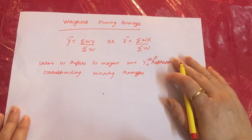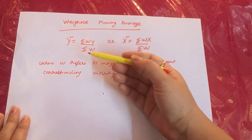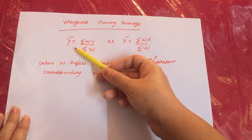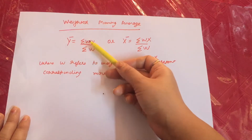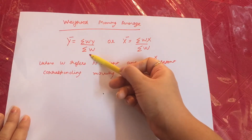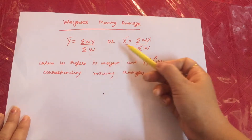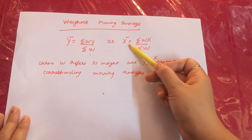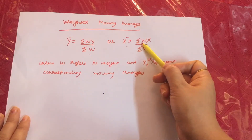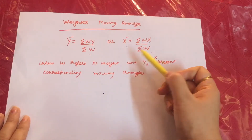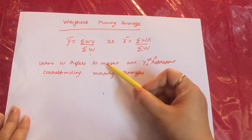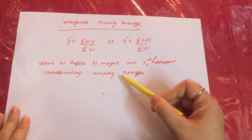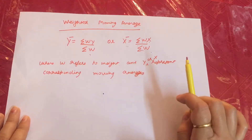The difference is that if the values are the x-series, then the formula will be: x-bar is equal to summation of W into X divided by summation of W, where W refers to weight and X represents the corresponding values.